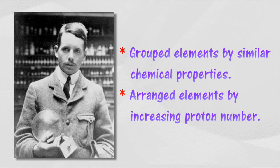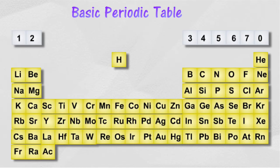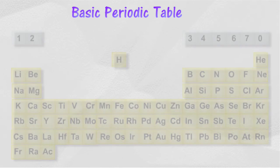Moseley also arranged elements with similar chemical characteristics into groups. This periodic table became the foundation for the study of the modern periodic table.